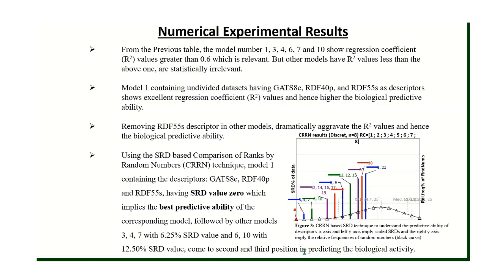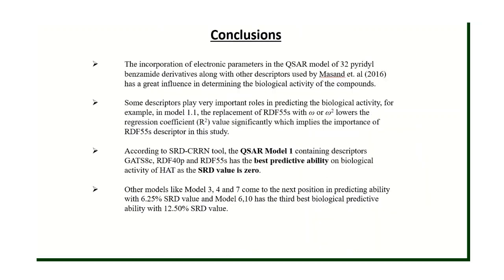In conclusion, the incorporation of electronic parameters like omega (ω) and omega squared (ω²) is quite acceptable and has great influence in determining the biological activity of compounds. The RDF-55 based descriptor is very important — replacing it with omega or omega squared dramatically decreases the regression coefficient, confirming its importance. Model 1's three descriptors have the best predictive ability, confirmed by an SRD value of zero, and can be used to guide drug synthesis. Models 3, 4, 7, and Model 6/10 come in second and third position.